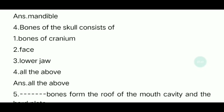Fourth question: The bones of the skull consist of? In our skull, what types of bones are there? The answer is: bones of the cranium, face, and lower jaw — all of the above.